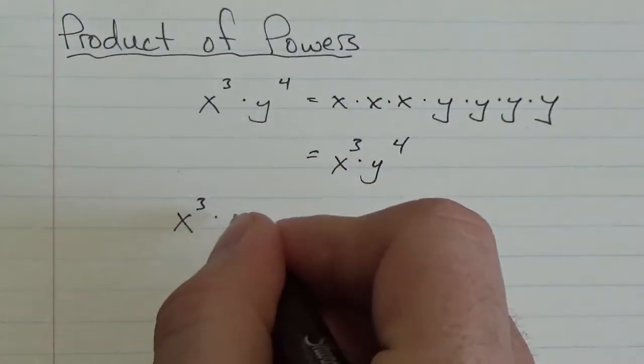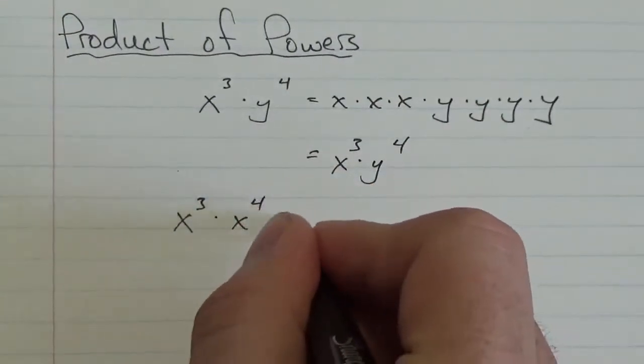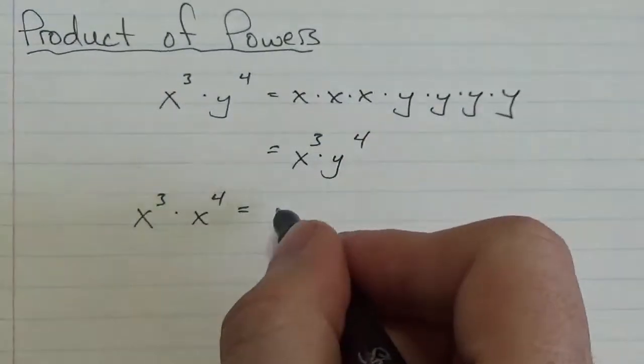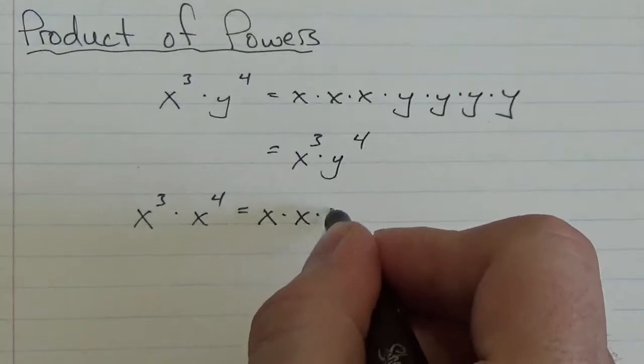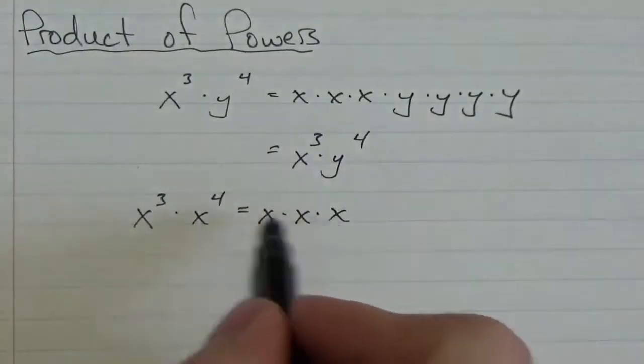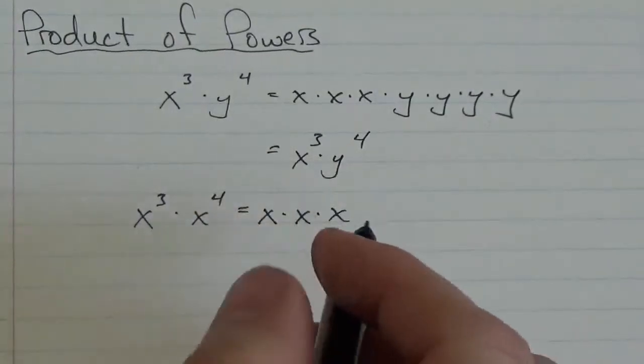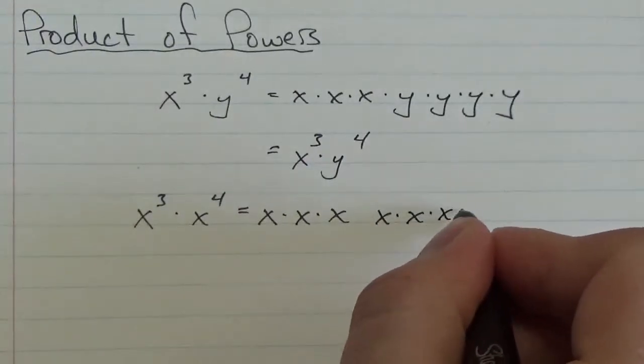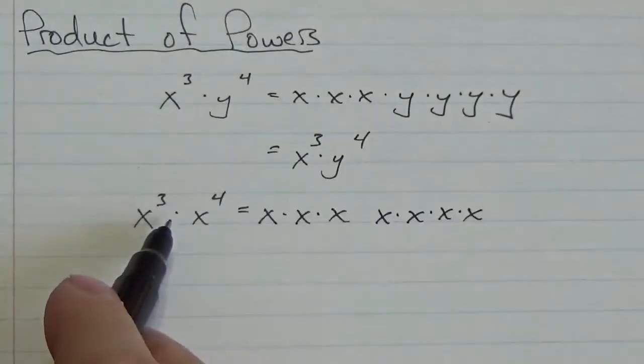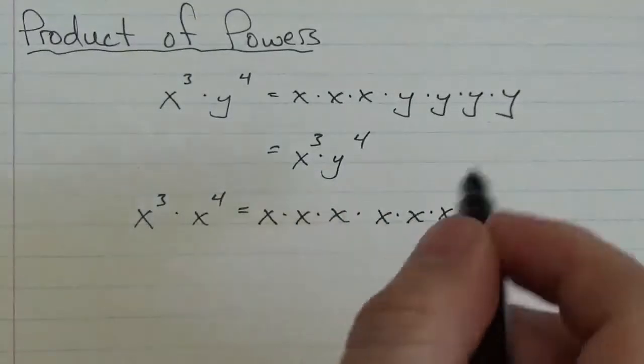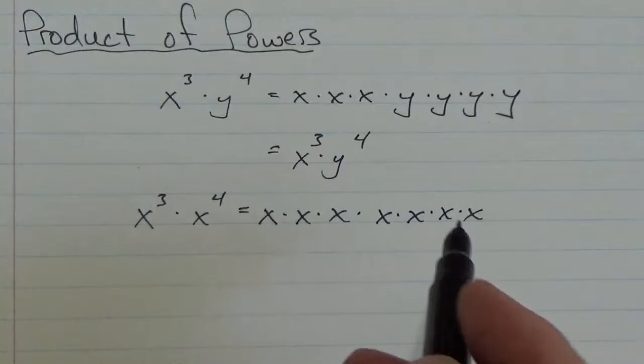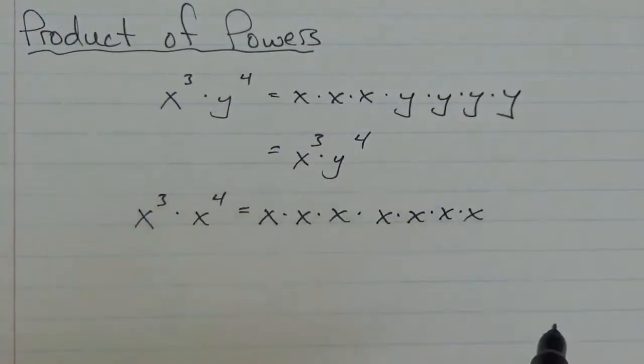What if it was x cubed multiplied by x to the fourth? Now the bases are the same. So now this x cubed, that means x times x times x. I've got an expression here where x is a factor. I've got three factors of x, I should say. And then here I've got four factors of x.